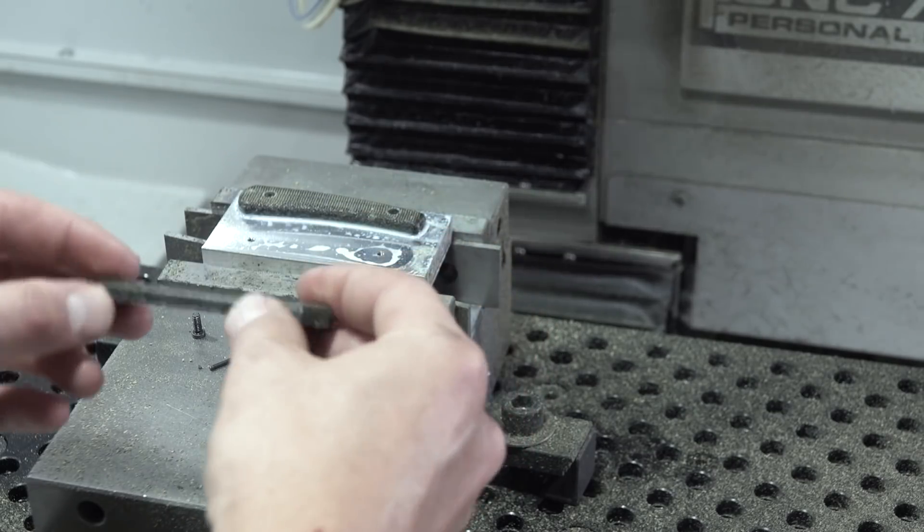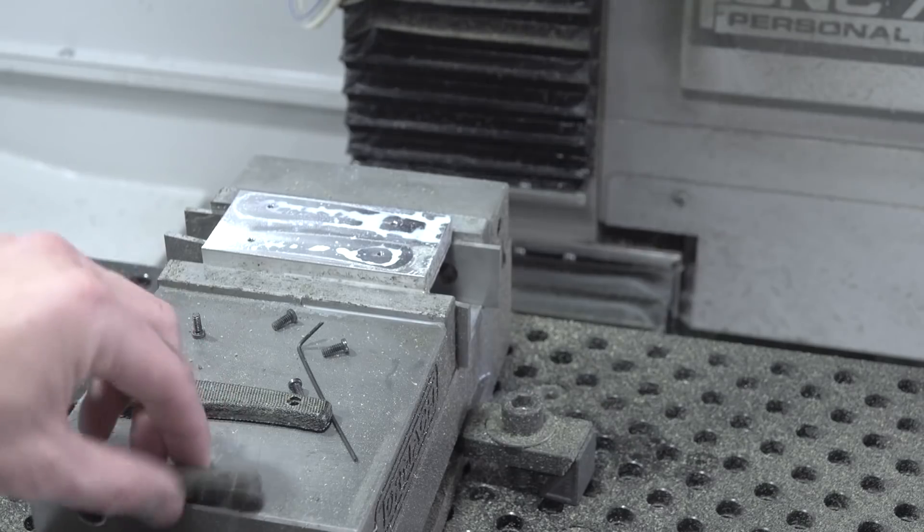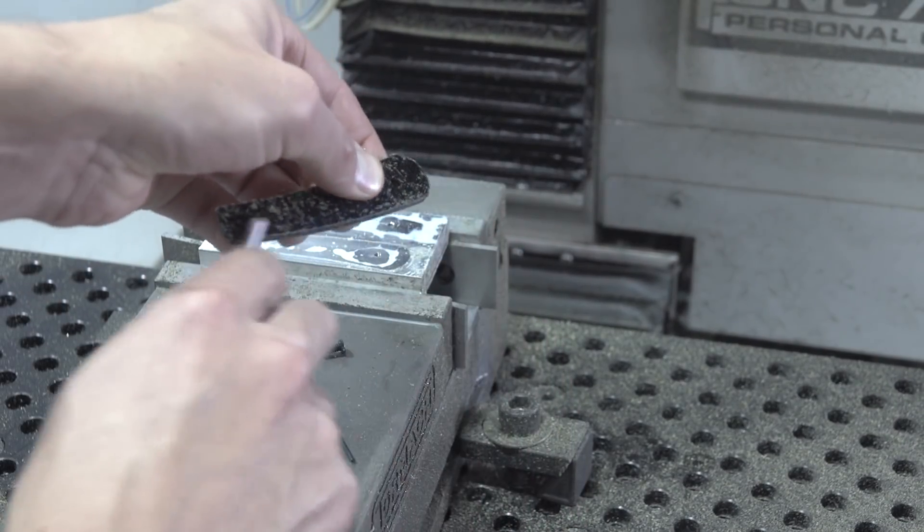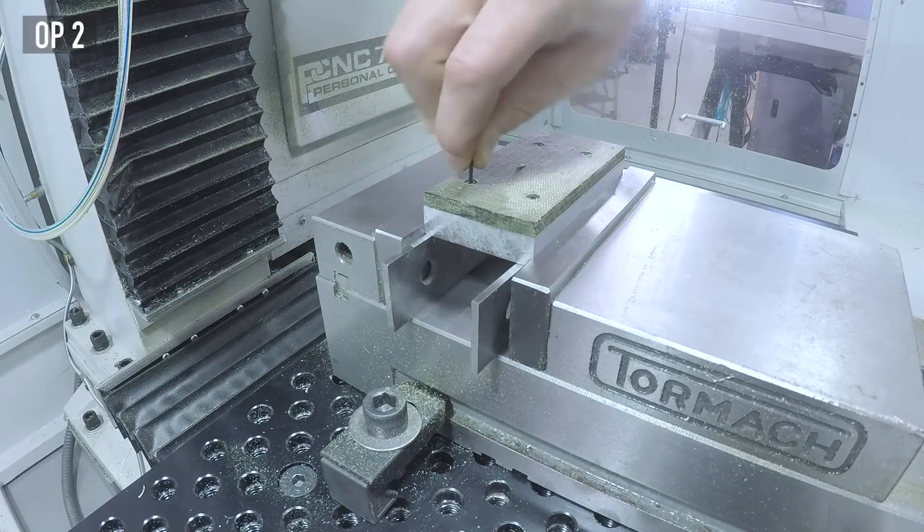In this first one, back in widget 168, we machined a custom fixture for the second operation on these micarta knife handles. There's just no other way you can do it. We did op 1 in a traditional vice but op 2 needed a custom fixture.